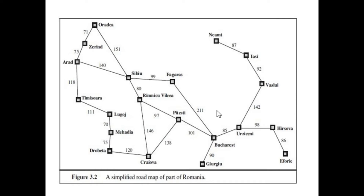Let's look at another problem in which a tourist or tour guide wants to move from one city to another city. This is the map of Romania, and we can say that a travelling salesman wants to move from one city to another. We should specify the initial state as well as the final state, so that we can move from the initial state to another state.